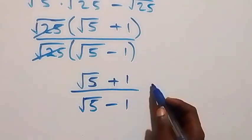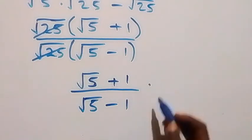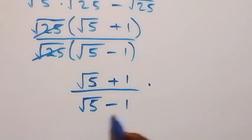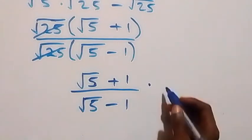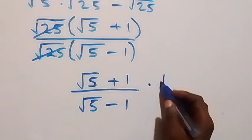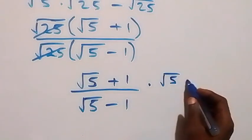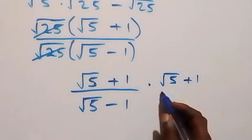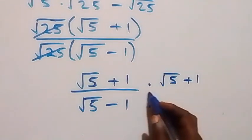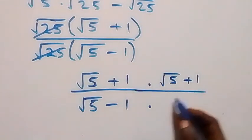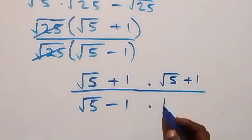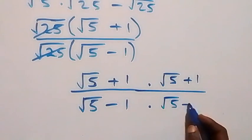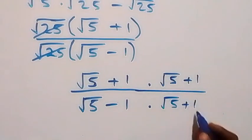From what we have, we can rationalize this and multiply both the numerator and denominator with the conjugate, which is root 5 plus 1. Then also here we multiply this by root 5 plus 1.